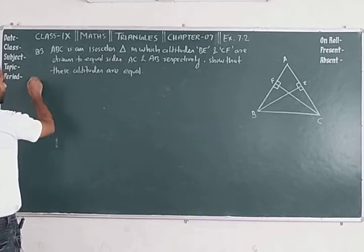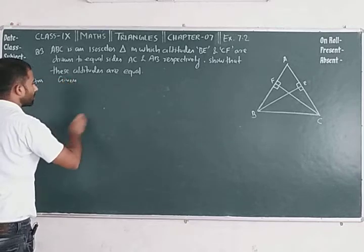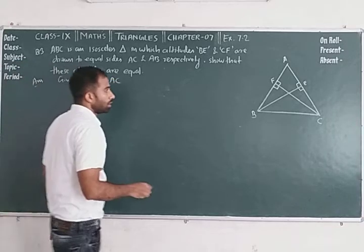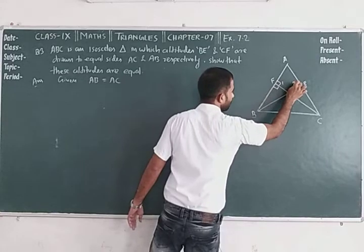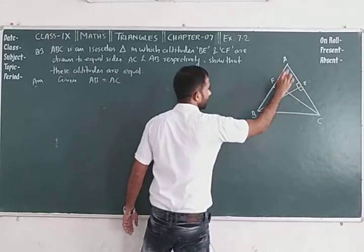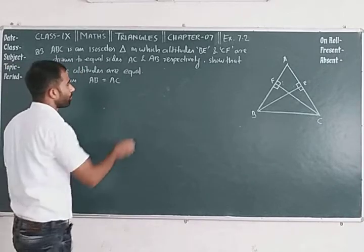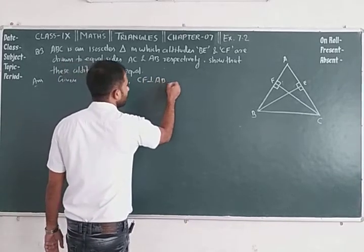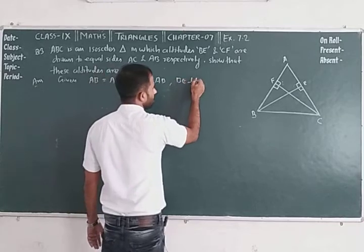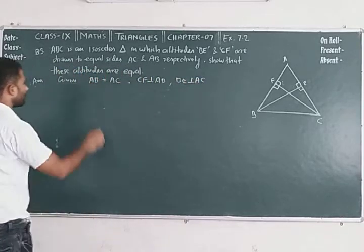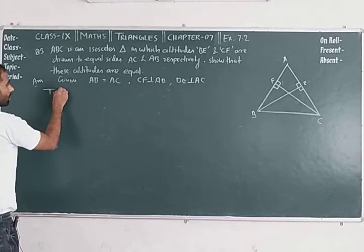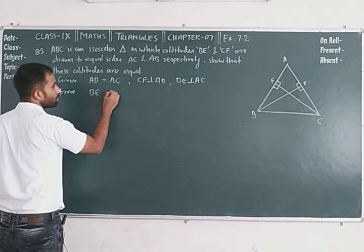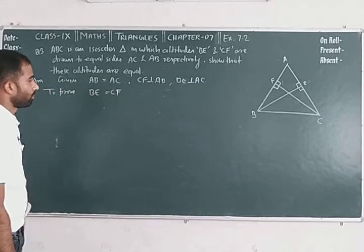Now let's write the formal solution. First write the given: AB is equal to AC. Also, CF is perpendicular on AB and BE is perpendicular on AC. To prove: BE is equal to CF — that is, the altitudes are equal.